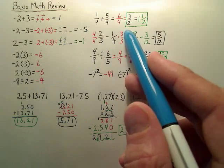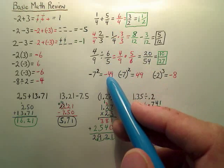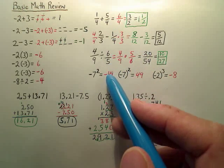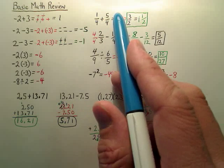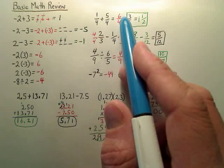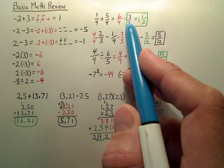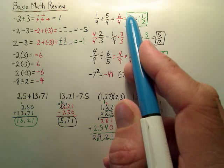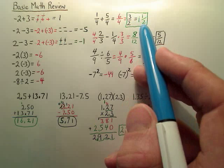A lot of people struggle with fractions, so here's a quick overview. When you add fractions, keep the same denominator and just add the tops. Then reduce. Also realize that 3 over 2 is the same as 1 and 1 half.